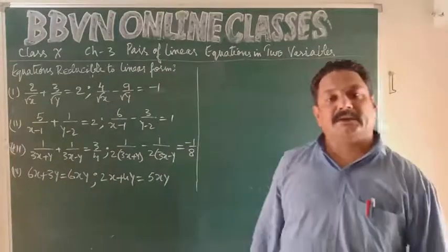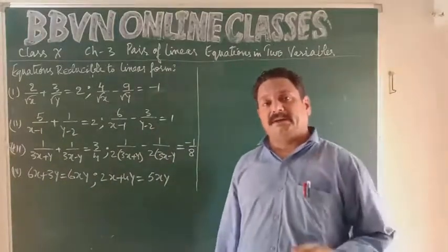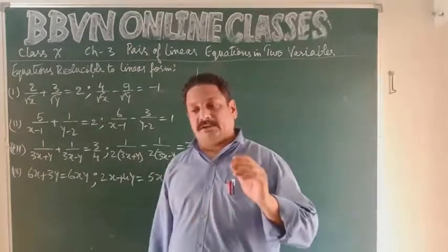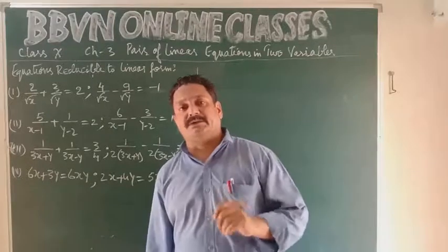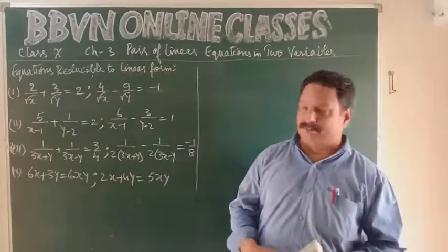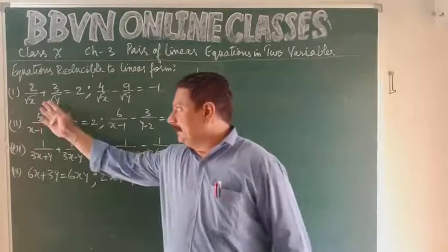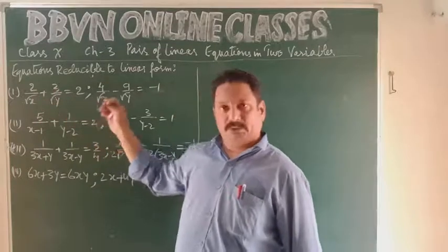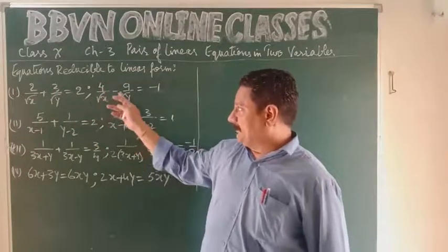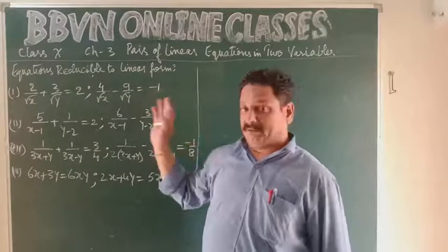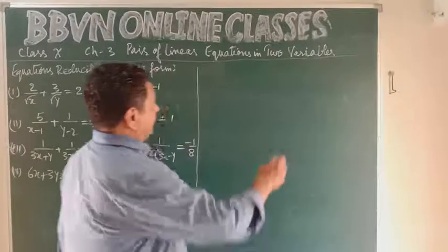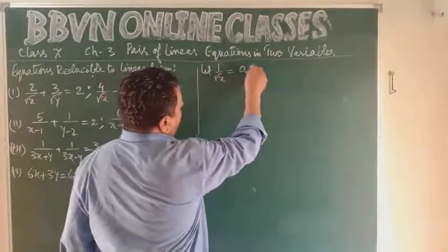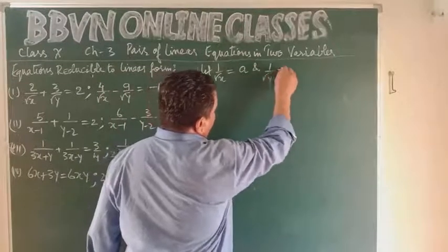Good morning class and welcome back. Today in Chapter 3 — pair of linear equations in two variables — we'll discuss how to reduce certain equations into the form of a pair of linear equations and solve them. Here we have: 2/√x + 3/√y = 2 and 4/√x - 9/√y = -1. We have to solve for x and y. Let 1/√x = a and 1/√y = b.